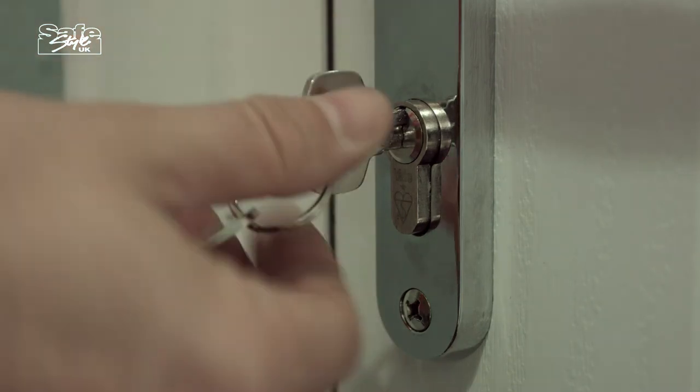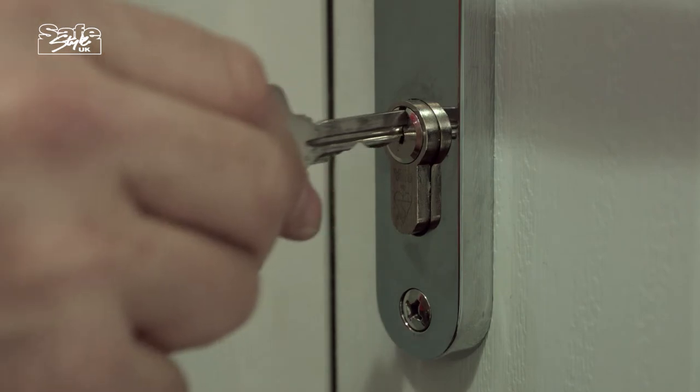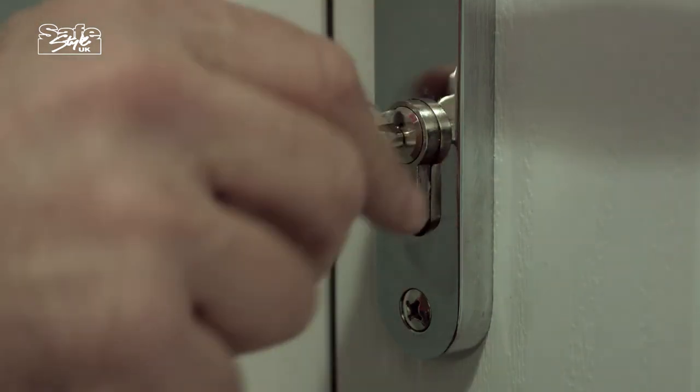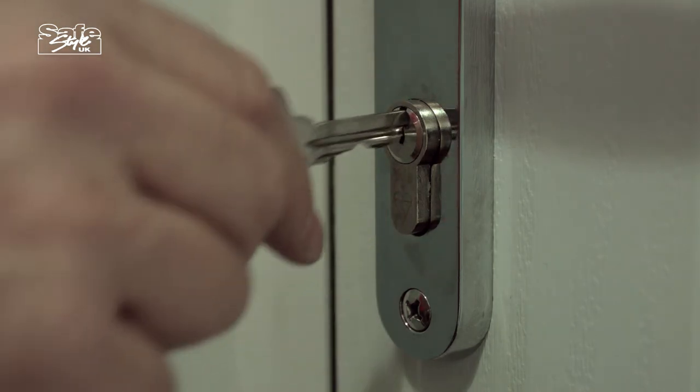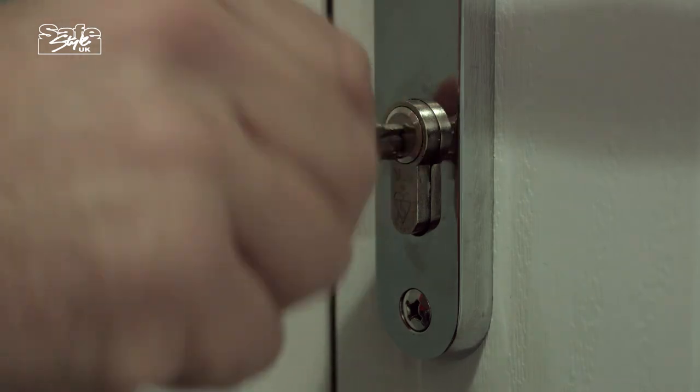Gently insert and remove the key from the lock several times to make sure the graphite is properly distributed. Safestyle recommends using the same make of key as the lock, such as Yale, when getting a key cut for best fit. It may be that a new key is a little thicker.